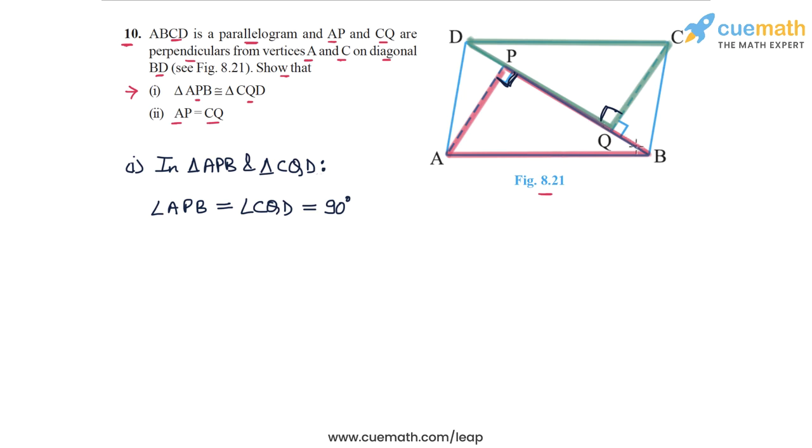Also, the angle at B, which is this angle, angle ABP is equal to the angle at D, which is this angle, angle CDQ, because these are alternate interior angles. So angle ABP is equal to angle CDQ, because these are alternate interior angles.